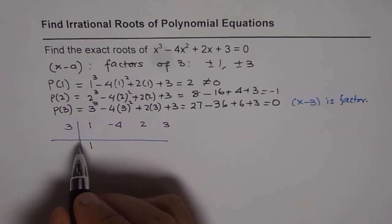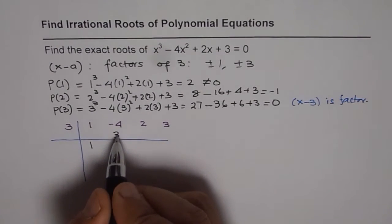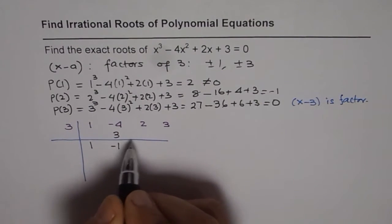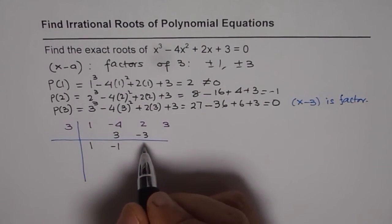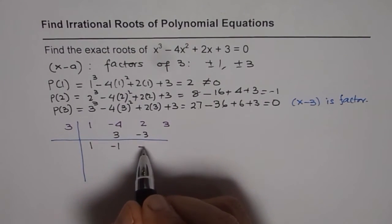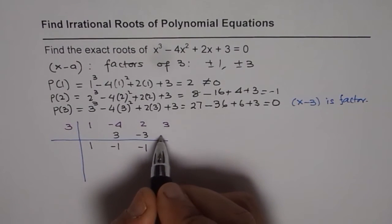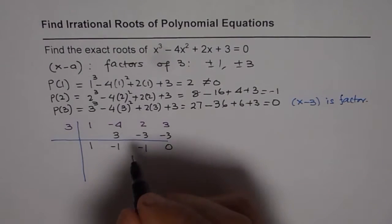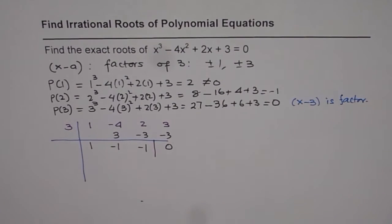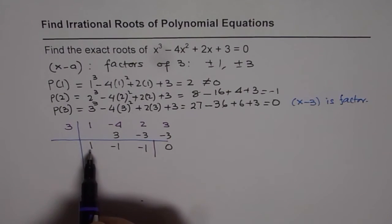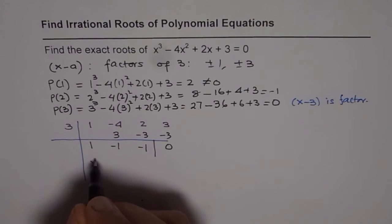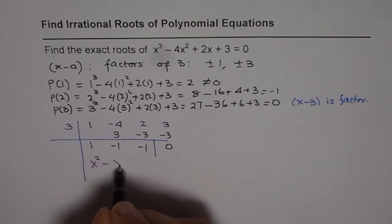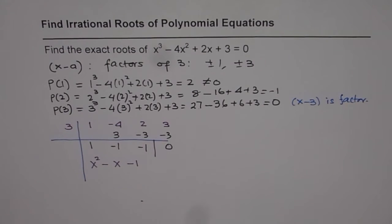3 × 1 = 3. Add them up to get -1. 3 × -1 = -3. Add them up to get -1. 3 × -1 = -3. When you add them up, 0 is your remainder. That was expected since we know x - 3 is a factor. With that, we found the other factor. This is the coefficient of x², so we have x² - x - 1. This is the other factor.